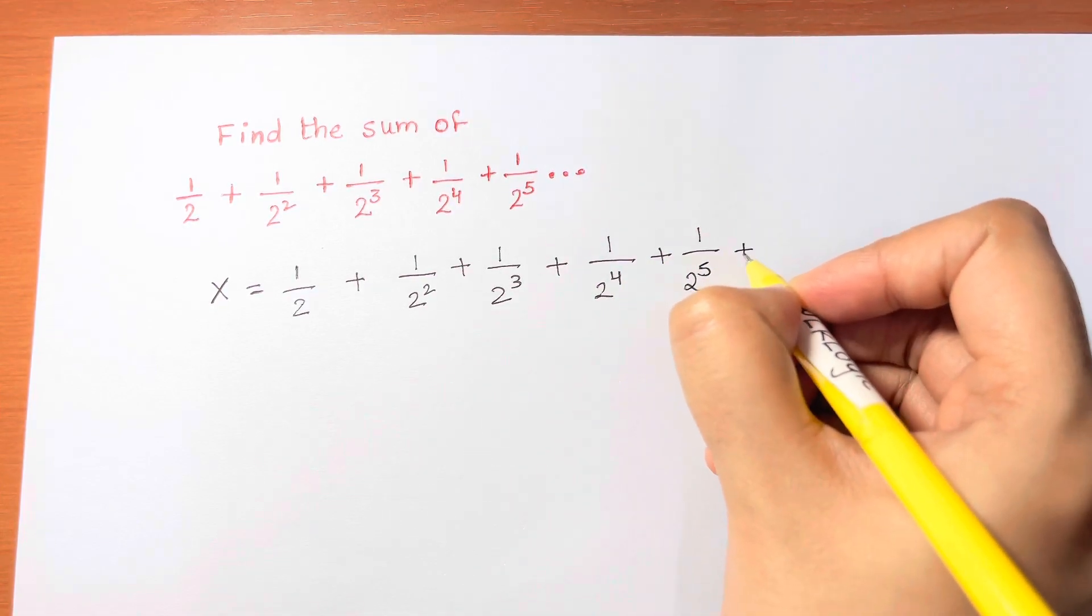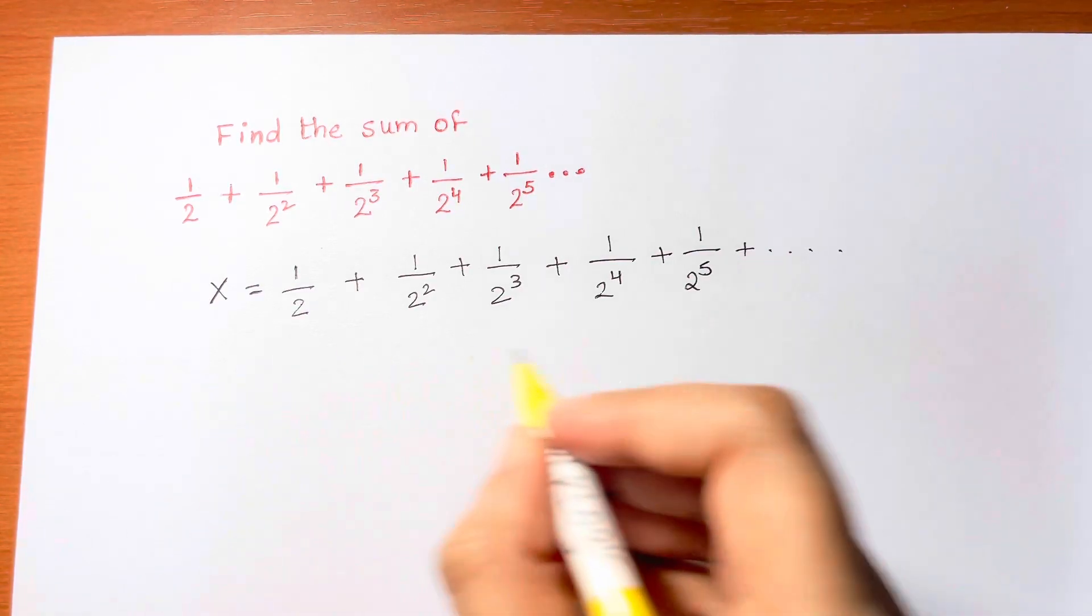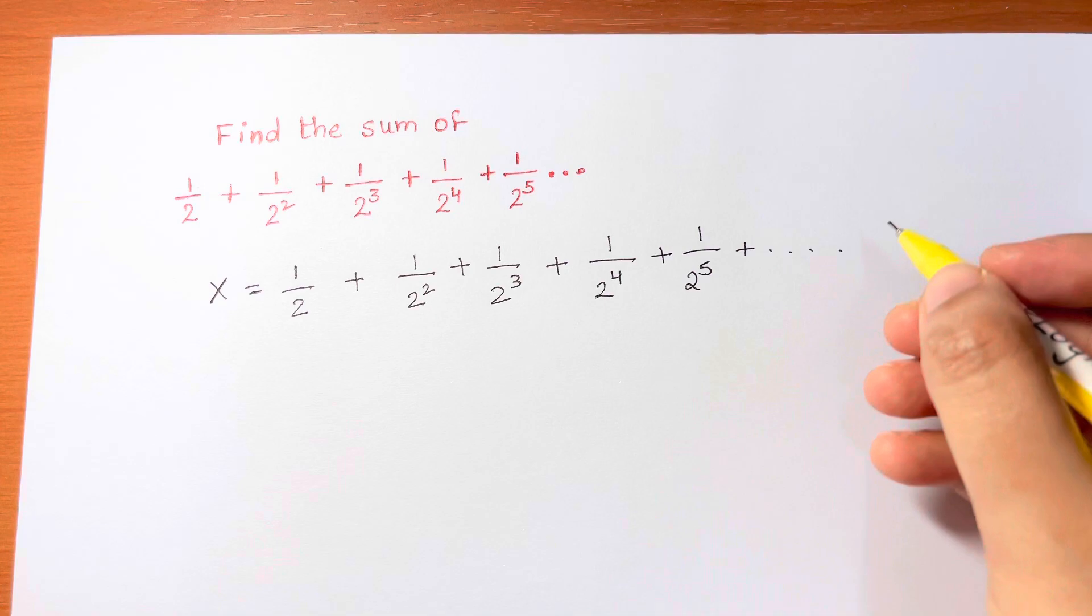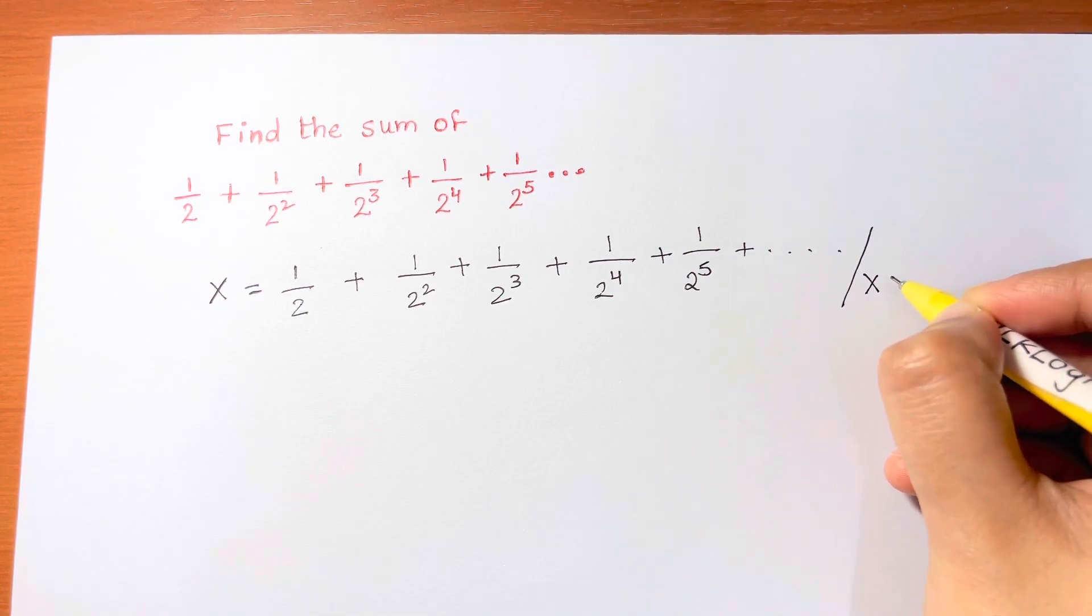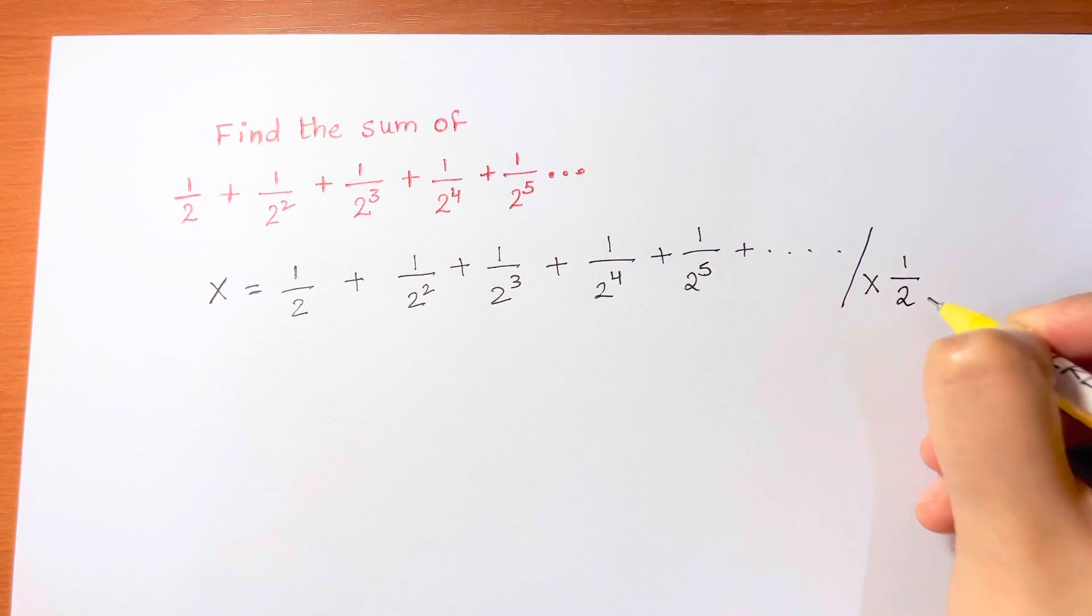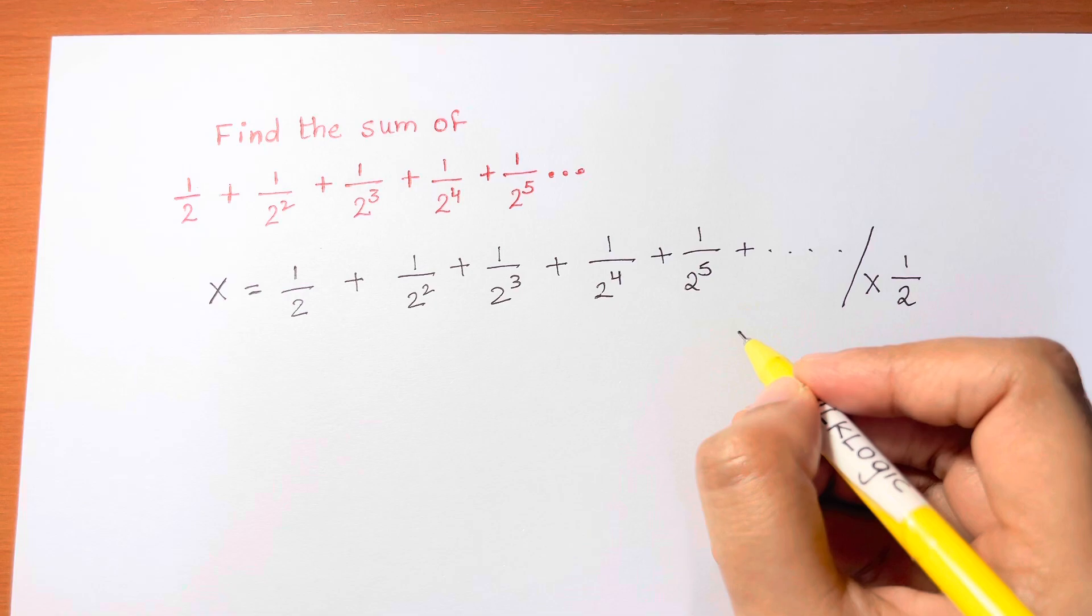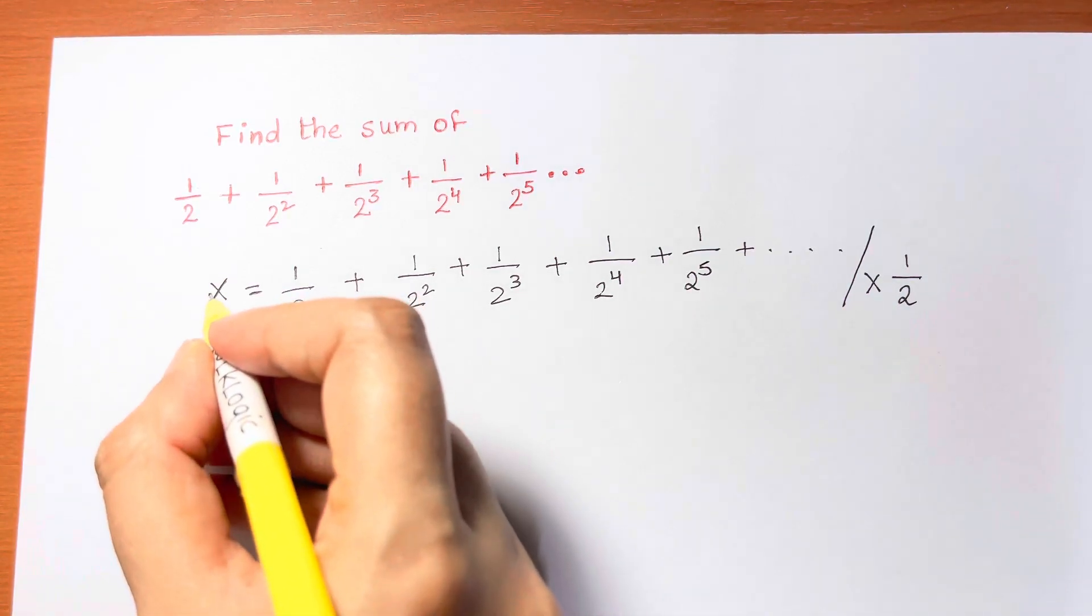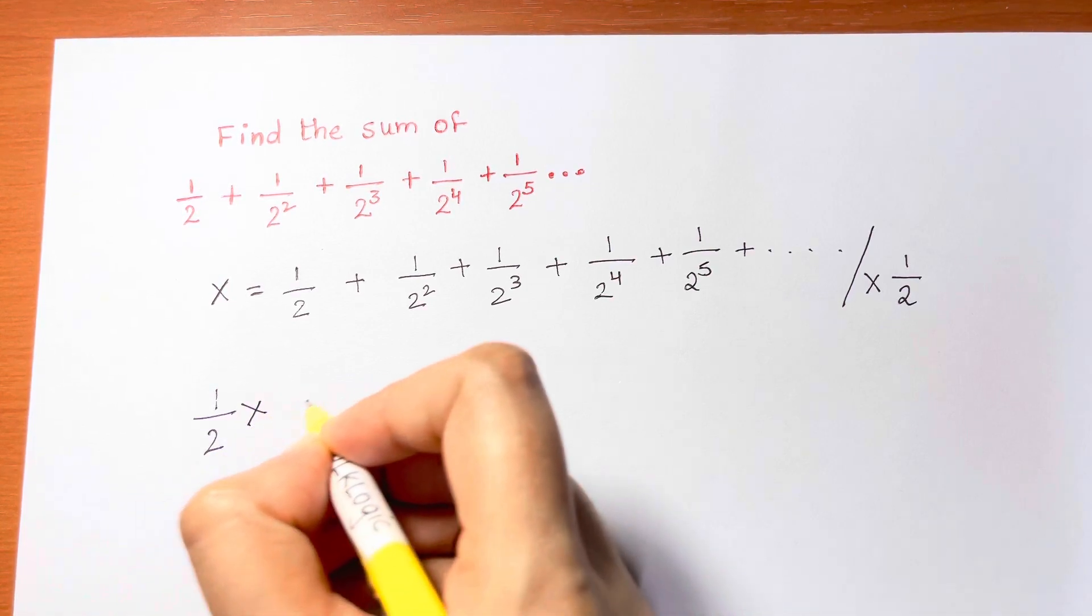Now the second step, what I'm going to do is very important. We're going to multiply this whole term by half—multiply this whole term left hand side and right hand side as well with half. Now what happens is, you will come to know, multiplying this with half, so it becomes half x, which is equal to half times half, so it becomes half squared, is that right?